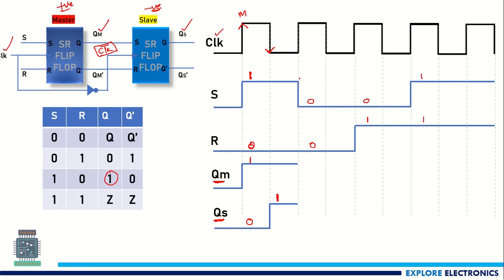In the next time unit, S=0 and R=0. At that time QM will be the same, because for S=0, R=0 inputs, Q stays the same — Q-bar stays the same. We call it the hold state. In this hold state, the previous value of 1 will be continued. Similarly, QS also continues, and even at the negative edge of the clock it will not change because the previous value is 1.